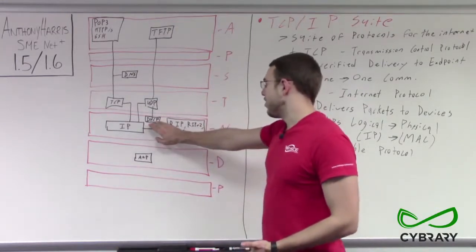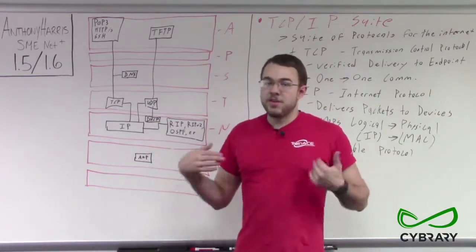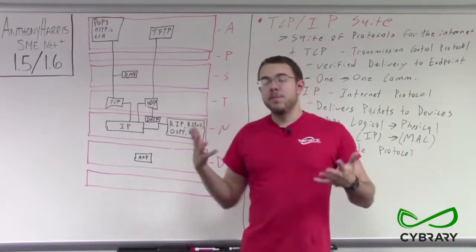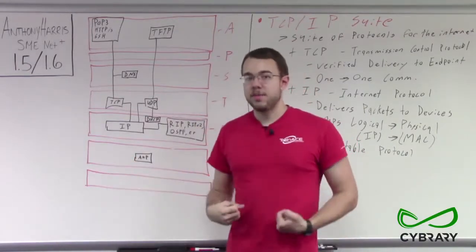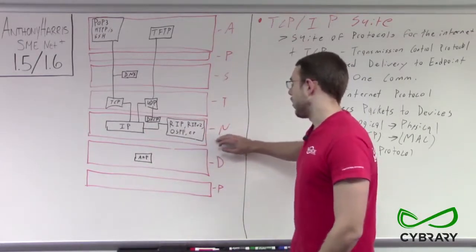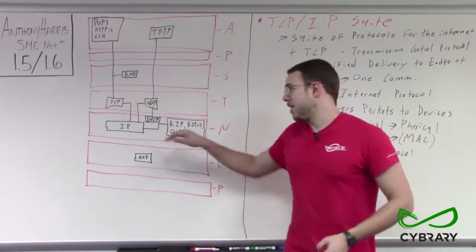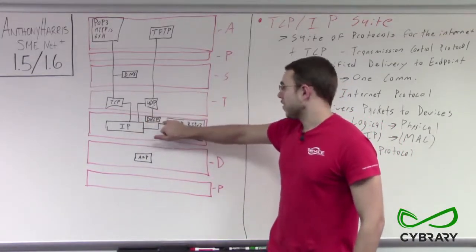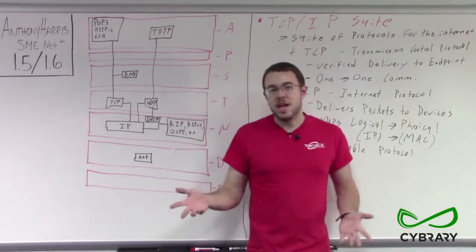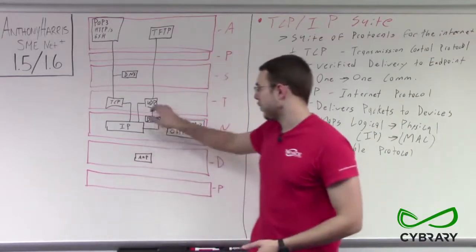We have DHCP — Dynamic Host Configuration Protocol. DHCP allows our computer to automatically determine what its IP address is going to be by sending out a message and receiving back DHCP information. DHCP is in our networking layer because it provides us with IP address information. DHCP packets are delivered via UDP — User Datagram Protocol — because we aren't going to verify that those DHCP packets got there; we just send them out.